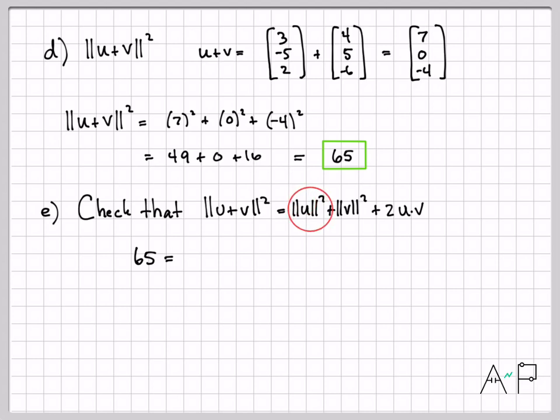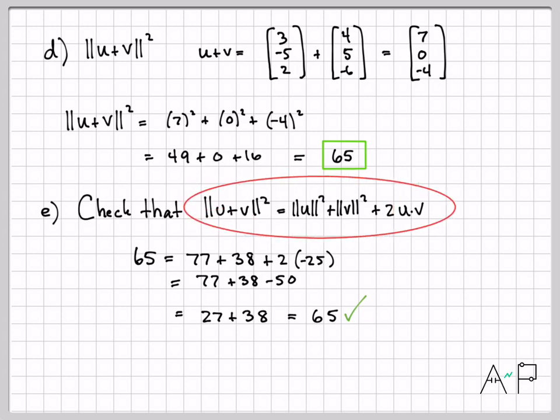On the previous chart, we computed the norm squared of u was 77. The norm squared of v was 38. And then 2 times the dot product of u and v, u dot v was minus 25. So let's see, 77, plus 38 minus 50 is 77 minus 50 is 27. And then 27 plus 38 is indeed 65, just like it's supposed to be. So nothing profound here, just we computed these individual components. This is a nice identity that we have for the norm squared of a sum, just kind of checking that these computations all go with each other like they're supposed to.